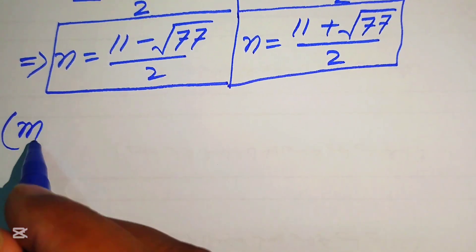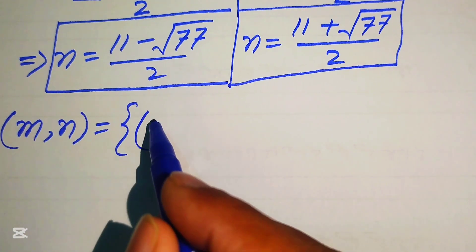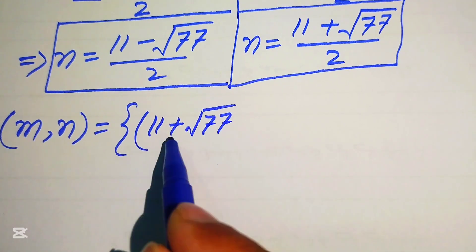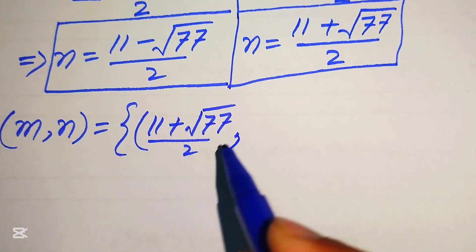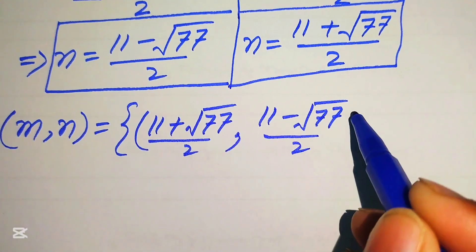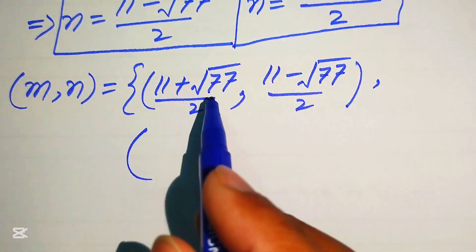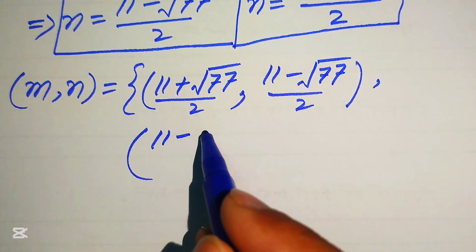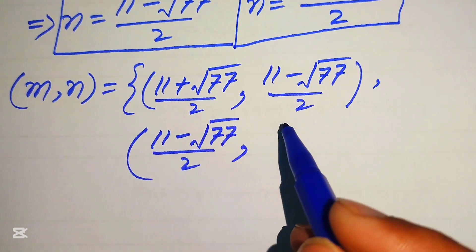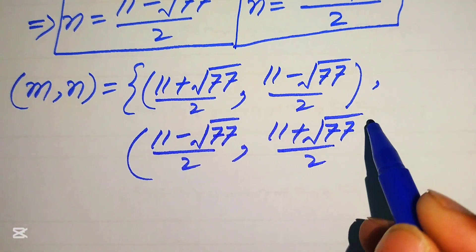We have two solutions. The first solution is m equals (11 plus square root of 77) divided by 2 and n equals (11 minus square root of 77) divided by 2. The second solution is m equals (11 minus square root of 77) divided by 2 and n equals (11 plus square root of 77) divided by 2.